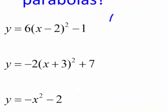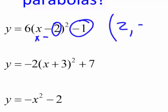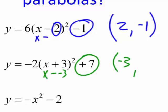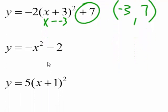If I look at this guy, what would be the vertex? Well, it's an x minus, that's good. So it's 2 and negative 1. There we go. All right, next one. Remember, it's x minus. So this is really minus a negative 3. So the x is a negative 3, and the y is a 7.